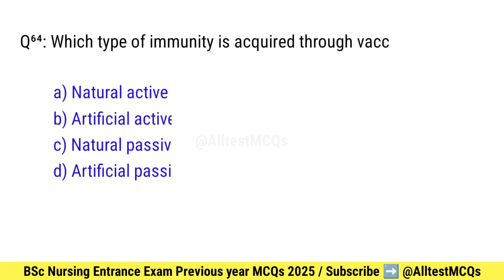Question number 64. Which type of immunity is acquired through vaccination? Correct option is B: Artificial active.